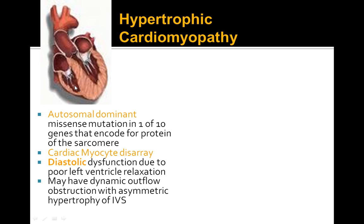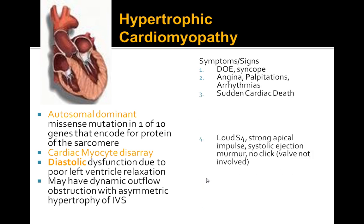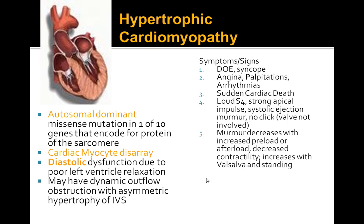As seen in this diagram, the interventricular septum is hypertrophied. Signs and symptoms include syncope, dyspnea on exertion, angina, palpitations, arrhythmias, sudden cardiac death, loud S4, strong apical impulse, and systolic ejection murmur. There is no click because the valve is not involved. The murmur decreases with increased preload or afterload, and increases with Valsalva and standing.